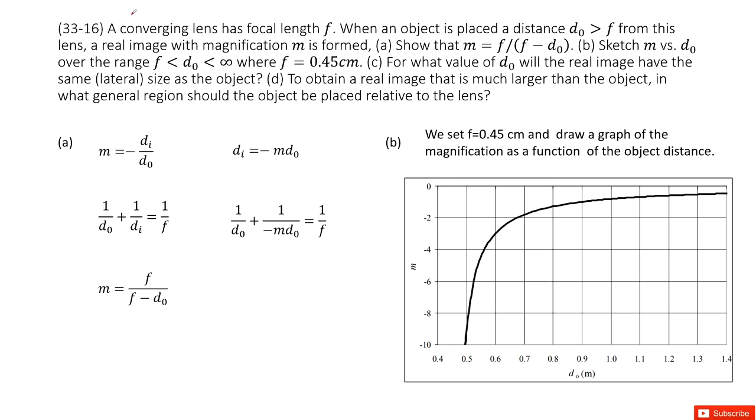So there you can see we have a convergent lens, right? The quantities given are the focal length f and also d₀. And now we know the magnification m. So now we need to prove this equation.